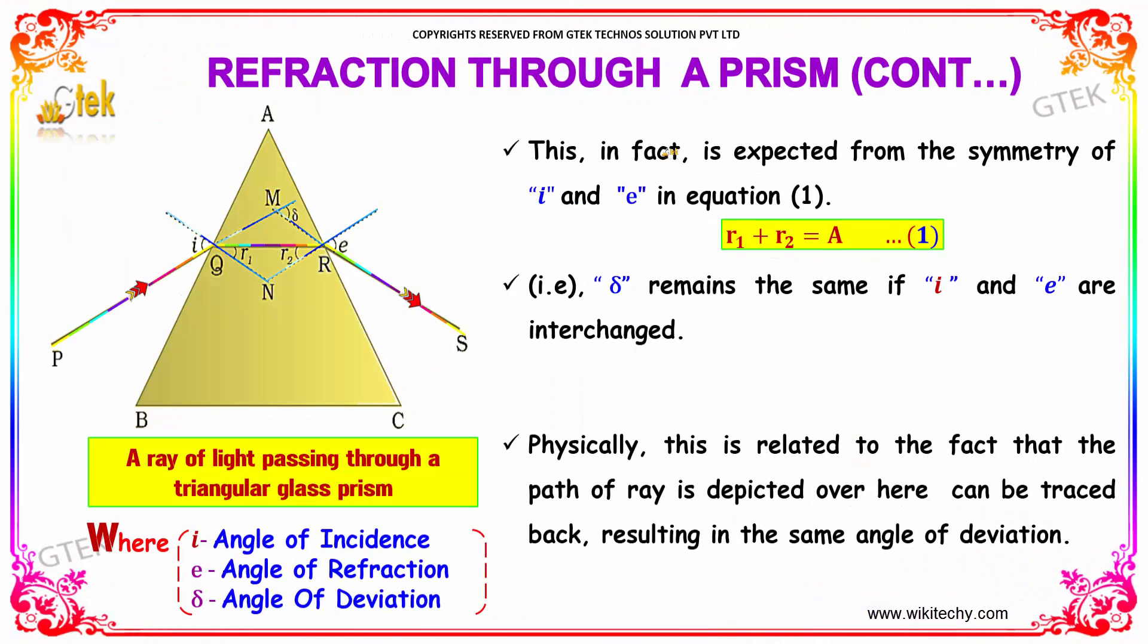This, in fact, is expected from the symmetry of i and e in the equation. Delta remains the same if i and e are interchanged. Physically, this is related to the fact that the path of ray depicted can be traced back, resulting in the same angle of deviation.